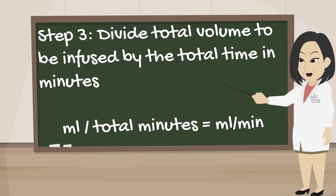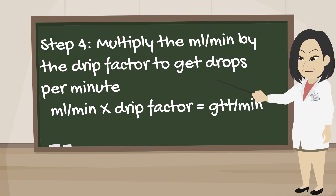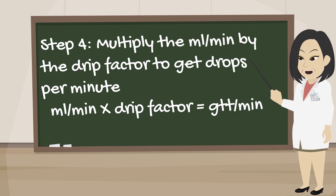Then, divide the total volume to be infused by the total time in minutes to get milliliters per minute. Finally, multiply the milliliters per minute by the drip factor to get the drops per minute.